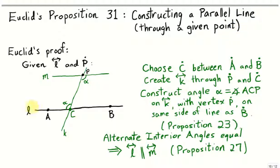Here's Euclid's proof. We're given a line L and a point P not on that line. Euclid says, choose a random point C on the line L and connect C to this point P. Consider this angle ACP, we'll call that angle alpha,